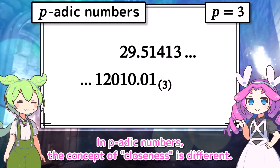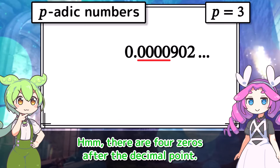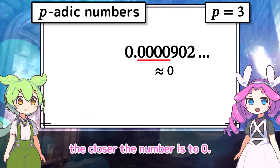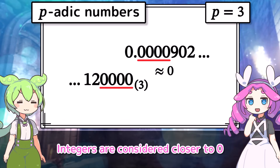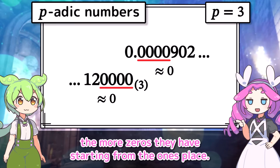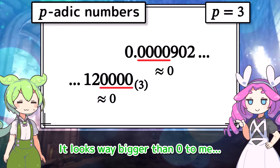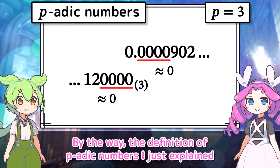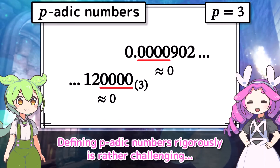In P-adic numbers, the concept of closeness is different. For example, in the real number world, consider a number with four zeros after the decimal point — it's a number quite close to zero. In the real number world, the more zeros you have after the decimal point, the closer the number is to zero. But in P-adic numbers, this concept is reversed. Integers are considered closer to zero the more zeros they have starting from the one's place. This is the essential characteristic of P-adic numbers — though the definition I just explained is quite an intuitive one, defining P-adic numbers rigorously is rather challenging.